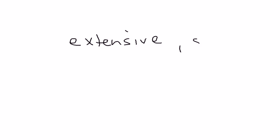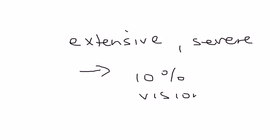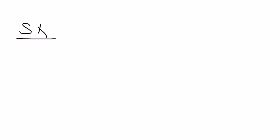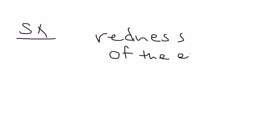An orbital infection is extensive and very severe. About 10% of the time it can lead to vision loss, which is a pretty dramatic consequence of orbital cellulitis. What are the signs and symptoms? There's going to be redness of the eyelid, and the surrounding tissues will also be swollen and red.